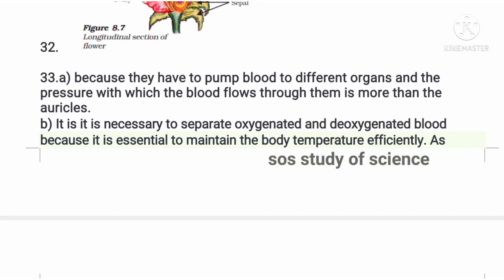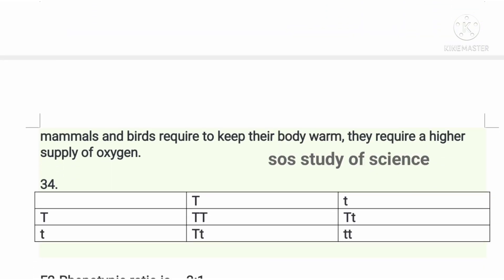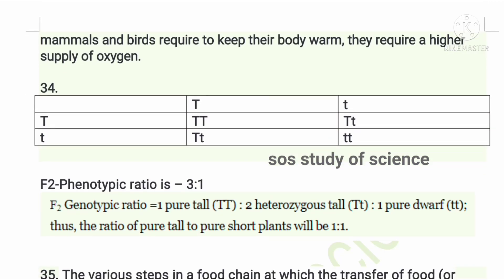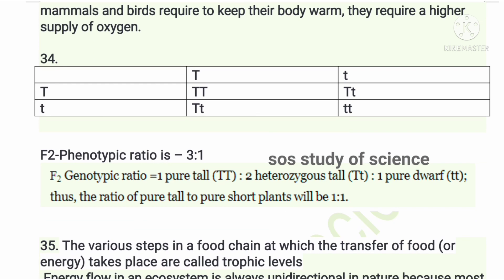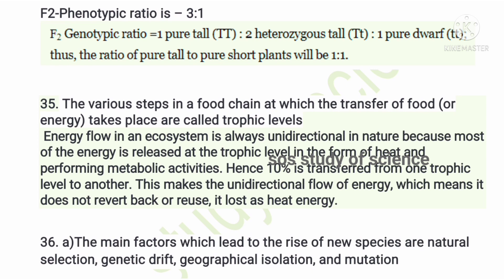The thirty-third question: arteries have thicker walls because they pump blood from the heart to different parts of the body under high pressure. It is important to separate oxygenated and deoxygenated blood because it helps organisms maintain body temperature, keep the body warm, and allows efficient supply of oxygen. The monohybrid cross F2 generation has a phenotypic ratio of 3:1 and a genotypic ratio of 1:2:1.